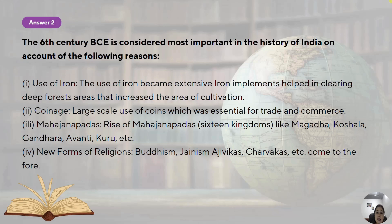Coming on to the use of iron — this is the Iron Age, the period when the Vedas were written down, also called the Vedic period. Before the Iron Age civilization was the Indus Valley civilization, which was a Bronze Age civilization. The use of iron became extensive; iron implements helped with clearing deep forest areas, which increased the area of cultivation — tools like axes were made. Regarding coinage, punch-marked coins were the earliest coins of India and were made of copper; later, gold coins and silver coins came.